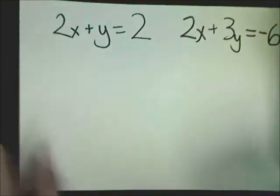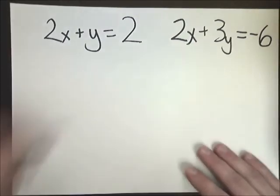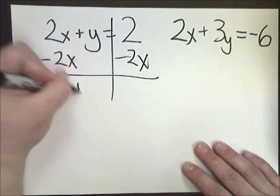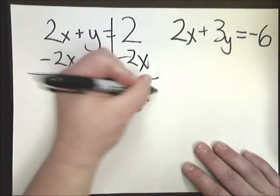So let's do one more. And that's it. So in this case, Y is not by itself. And that's the first step. So we're going to do this. Subtract 2X from both sides. Y is equal to negative 2X plus 2.